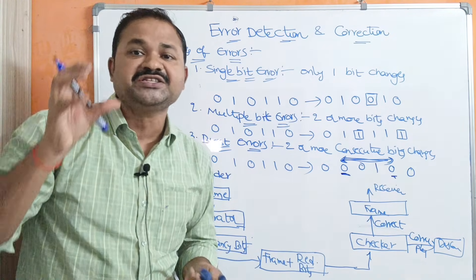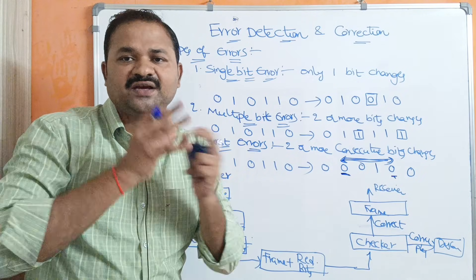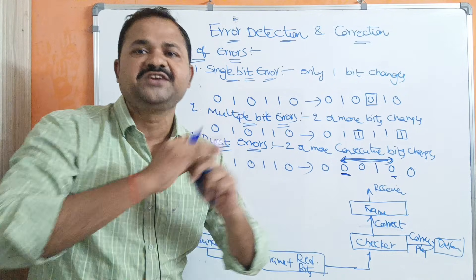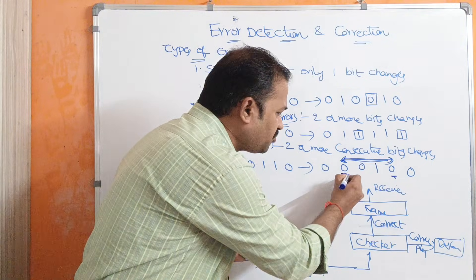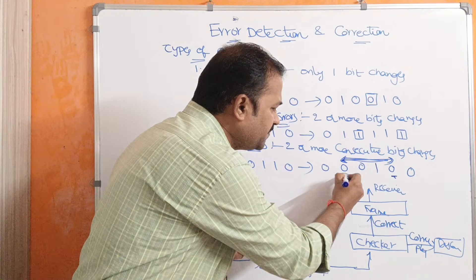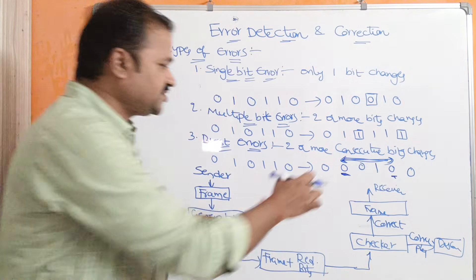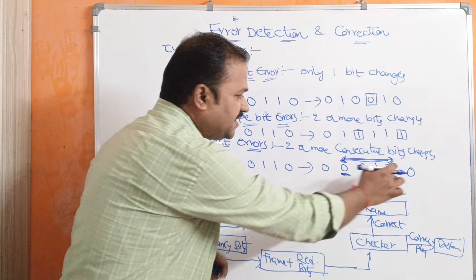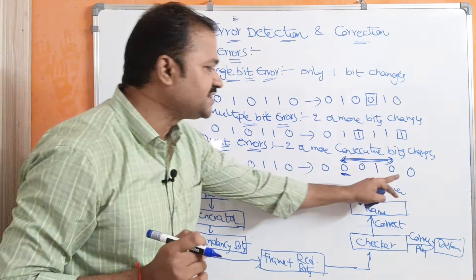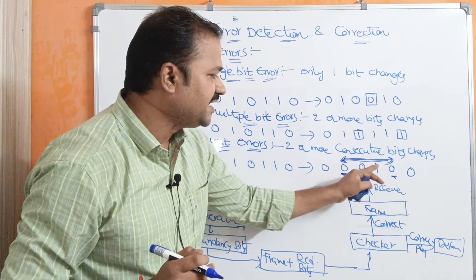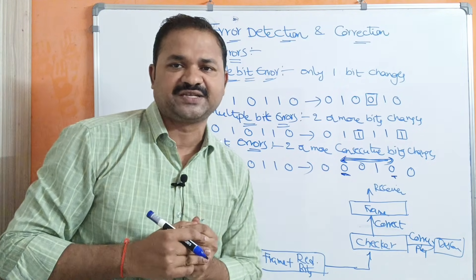Burst means consecutive bits, but consecutive here does not mean sequential bit-by-bit — we compute the burst length based upon the first changed bit and the last changed bit. So here the first bit in this burst and the last bit in this burst give us a length of four bits. The length of this error is four bits.